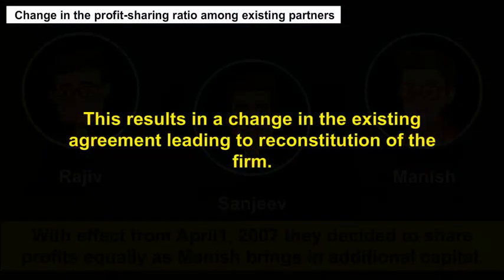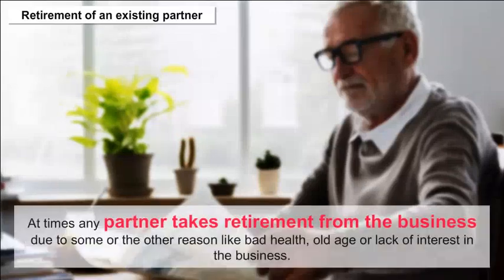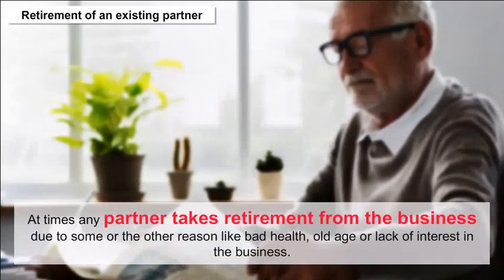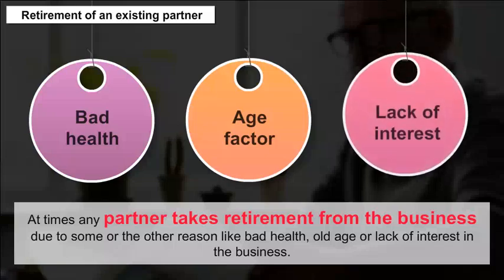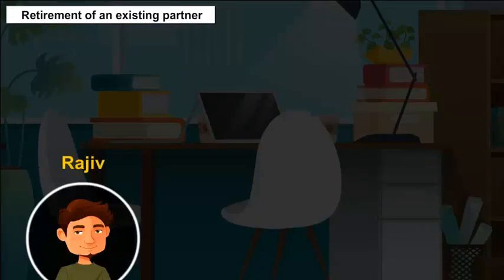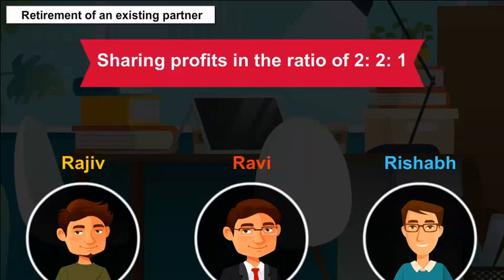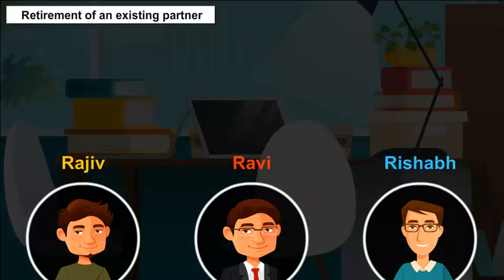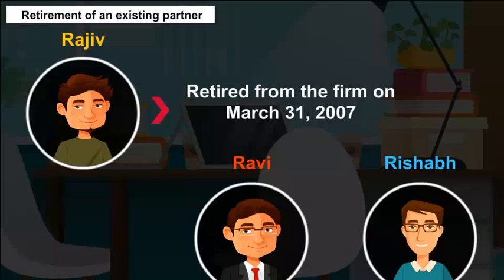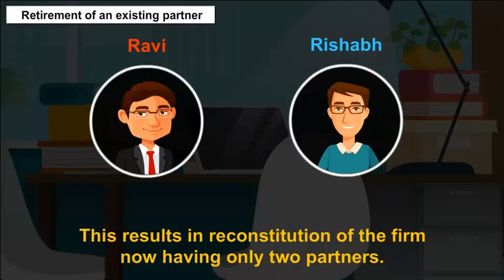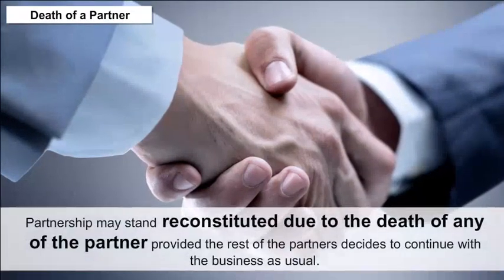This results in a change in the existing agreement leading to reconstitution of the firm. Retirement of an existing partner: At times any partner takes retirement from the business due to reasons like bad health, old age, or lack of interest. For example, Rajiv, Ravi and Rishabh are partners sharing profits in the ratio of 2:2:1. On account of illness, Rajiv retired from the firm on March 31, 2007, resulting in reconstitution of the firm with only 2 partners.